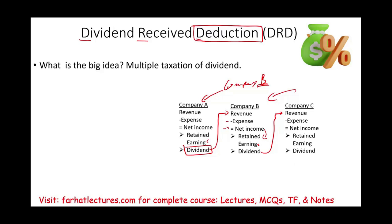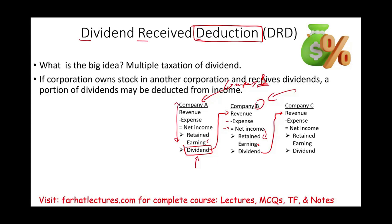I hope you're starting to see the point — it's the same dividend that Company A generated, paid out to Company B, which was taxed first because Company A paid their taxes first. Then that same dividend was transferred to Company B, and Company B paid taxes on it. Then some of it was paid to Company C, and Company C paid taxes on it. So notice — the same income was just transferred from Company A to Company B to Company C, and it's being taxed multiple times.